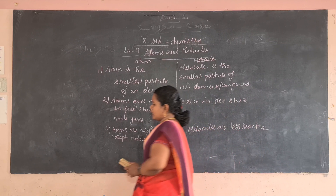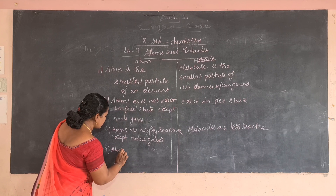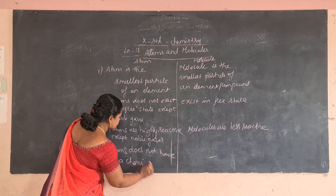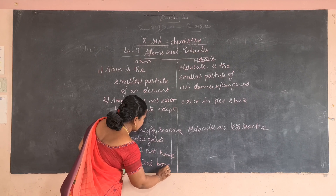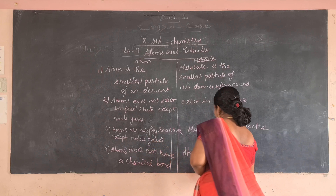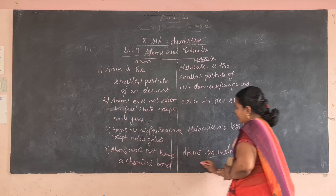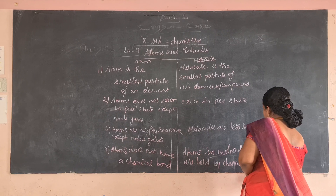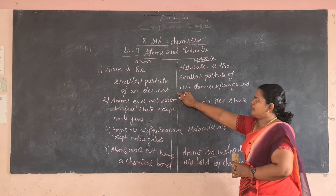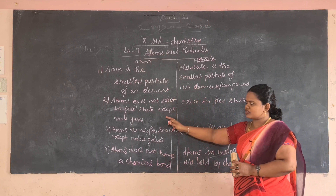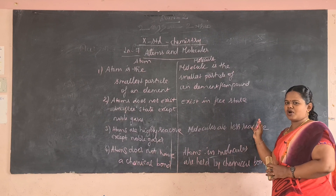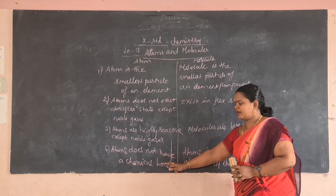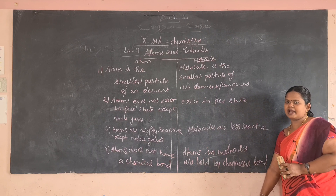Atoms do not have a chemical bond, whereas atoms in molecules are held together by chemical bonds. So these are the differences between atoms and molecules, and this can be asked in a short answer question.